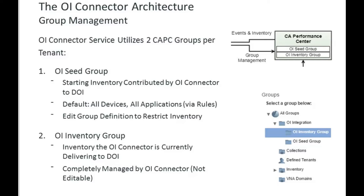If the OI Connector fails or connectivity between the connector and DOI is lost, metrics from that period would be lost — the connector does not go back and re-query metrics for time that has passed. While the connector is running, it is always harvesting the latest data.